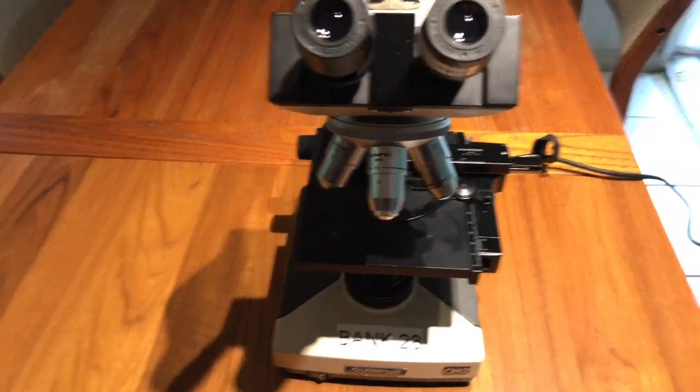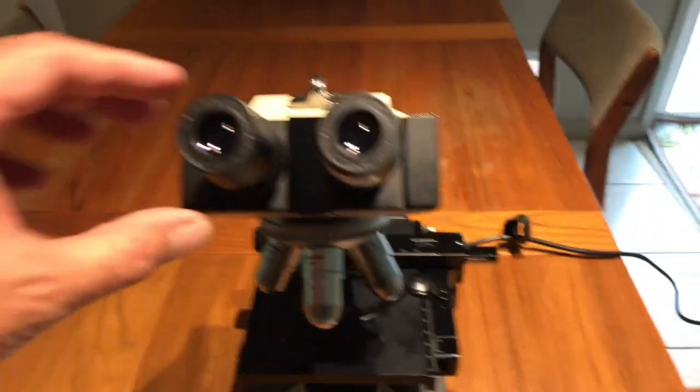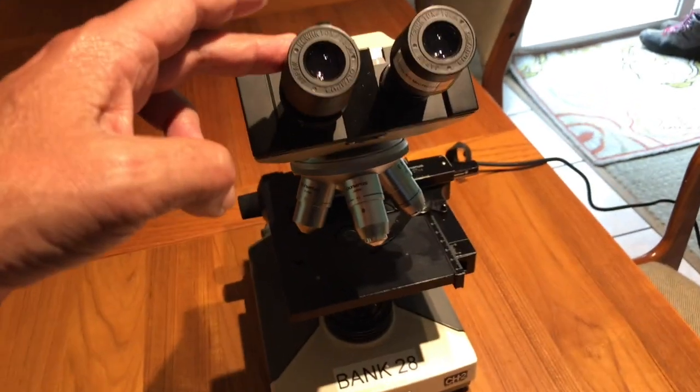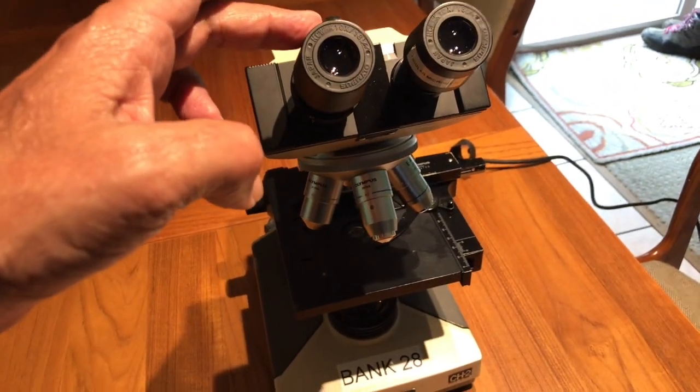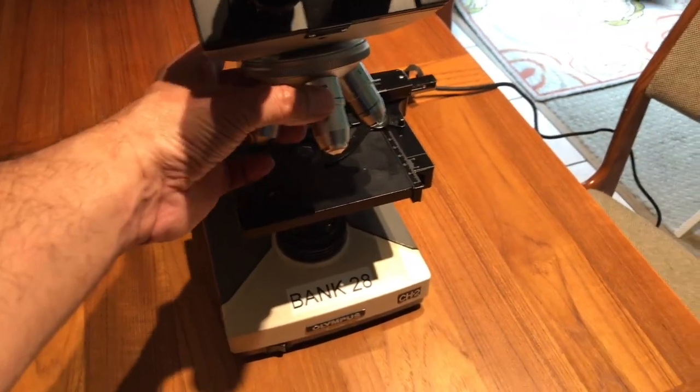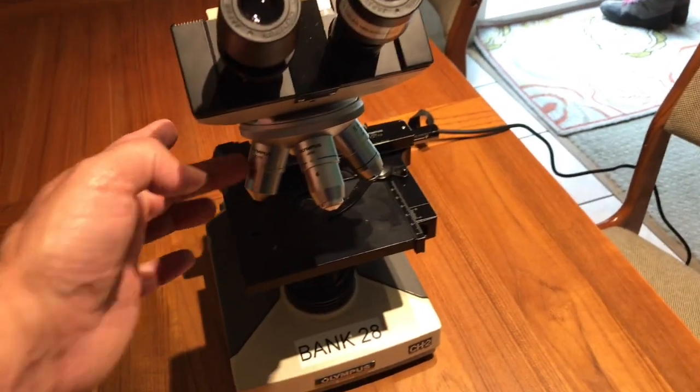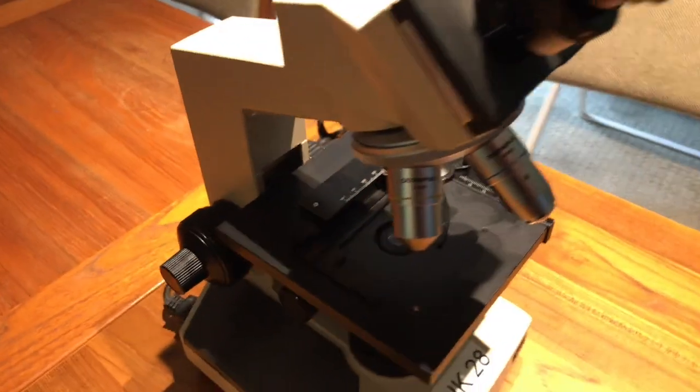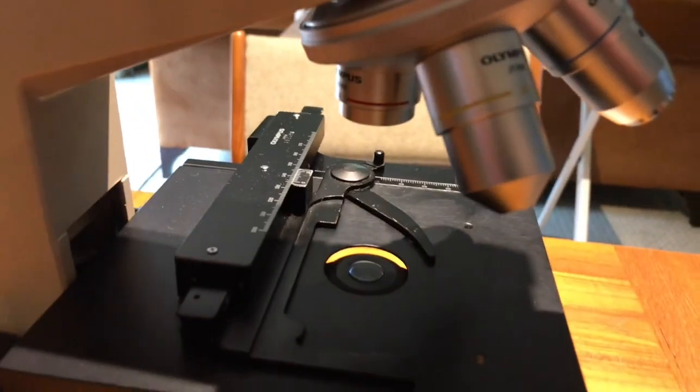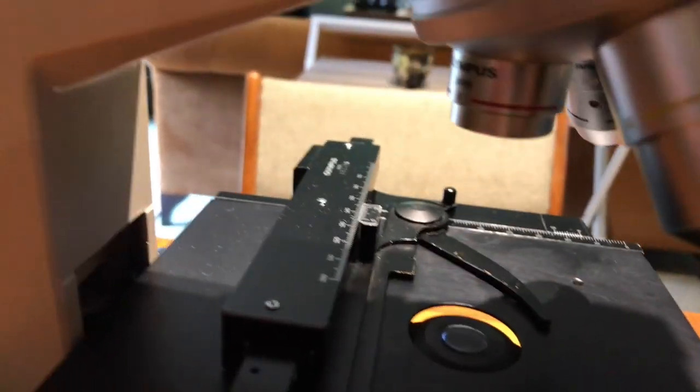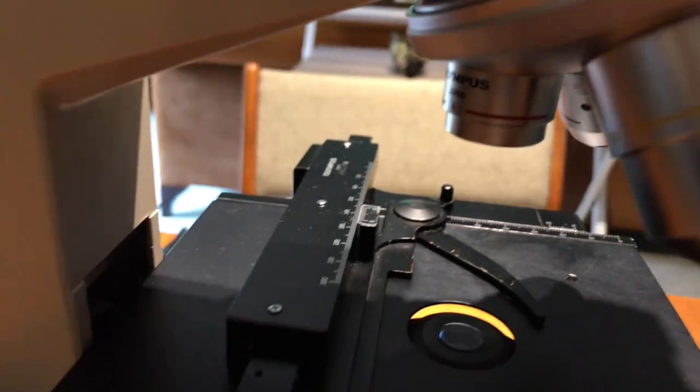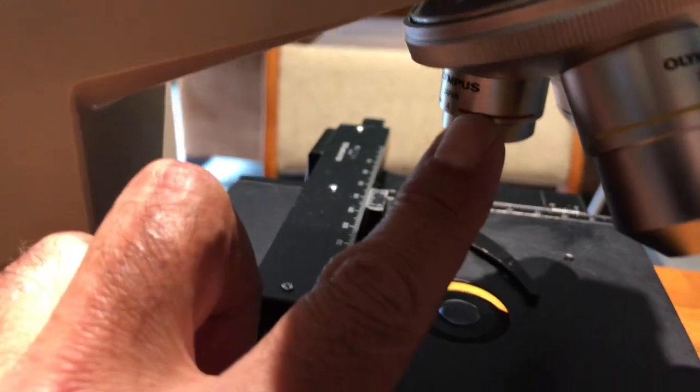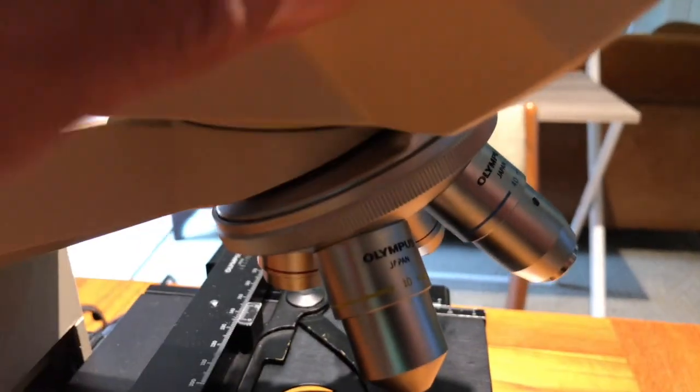The total magnification, you're going to figure that out by multiplying the magnification of the eyepieces times the magnification of your objective. So for example, right now I have selected the objective that is 4x with the red band, and so the total magnification is going to be 4 times 10, which is the magnification of the eyepieces, so that will be a total magnification of 40x.